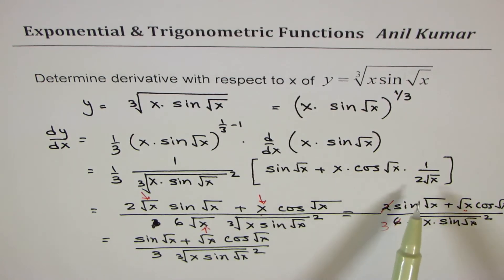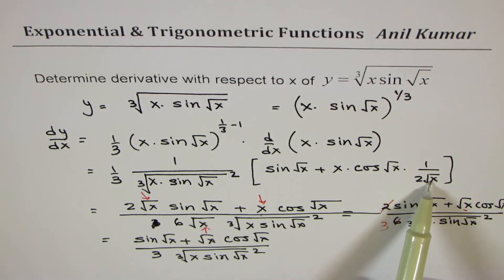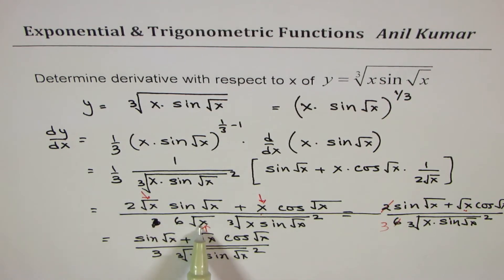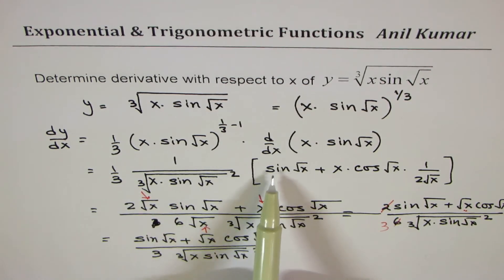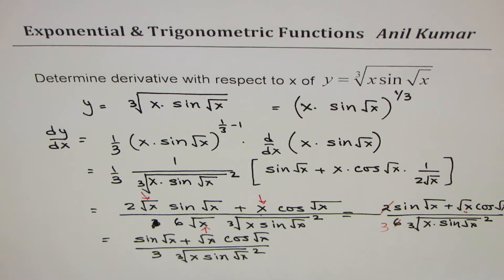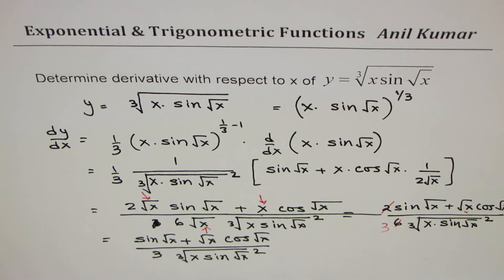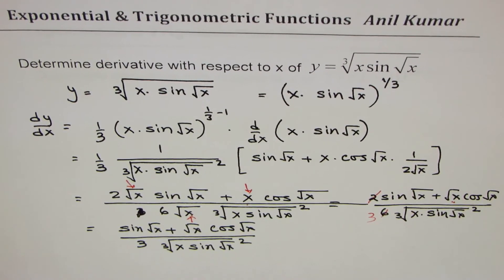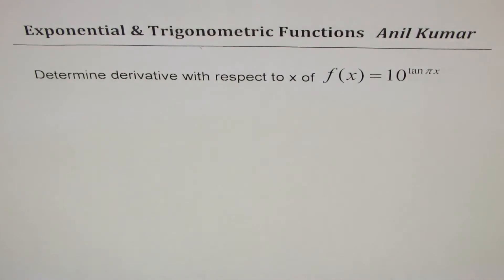To recap: we took the common denominator 2√x to get 6√x, then factored and canceled √x from numerator and denominator to arrive at the simplified result. Let's move on to the next question.